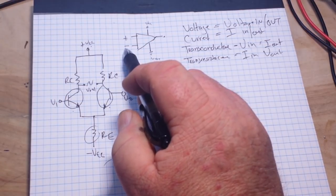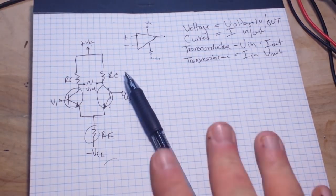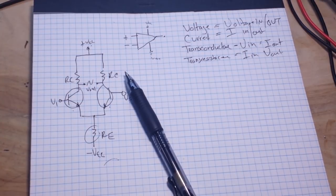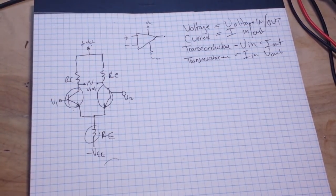Also known as the common mode gain. And in a perfect world, if the signal applied to the non-inverting and the inverting inputs are exactly the same, then there should be no change on the output.